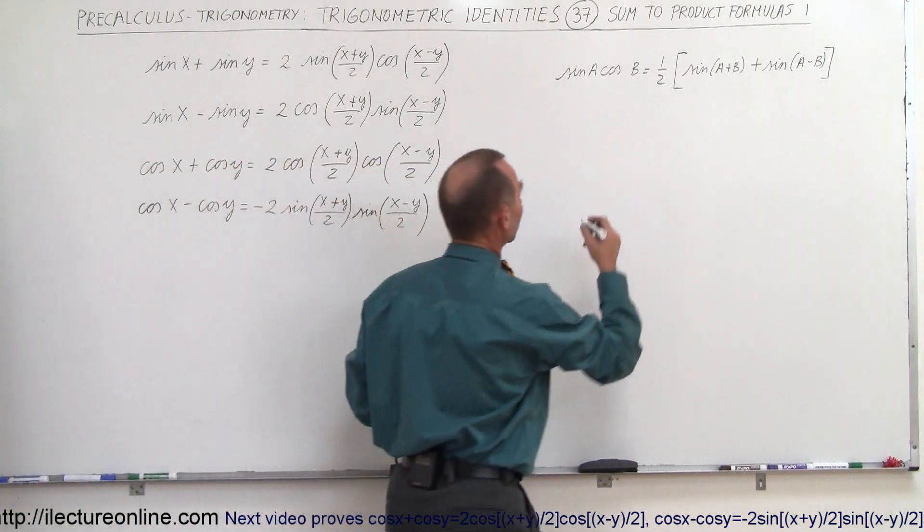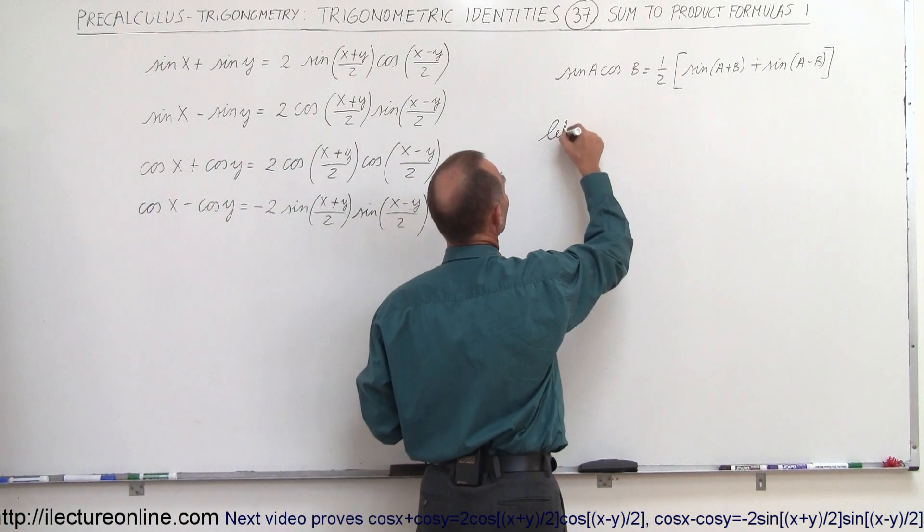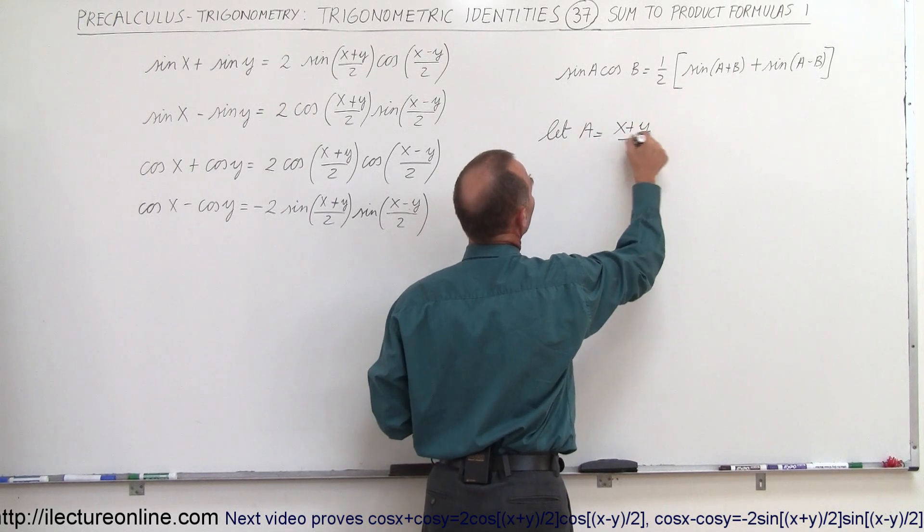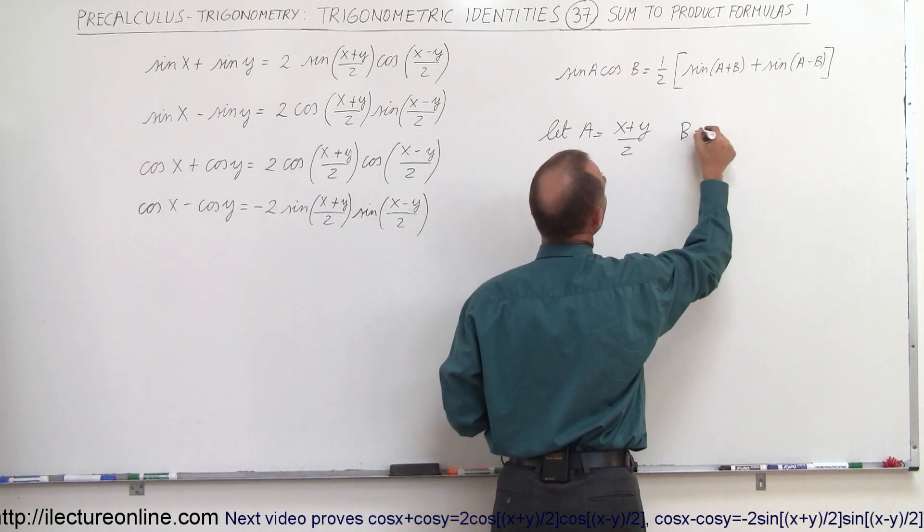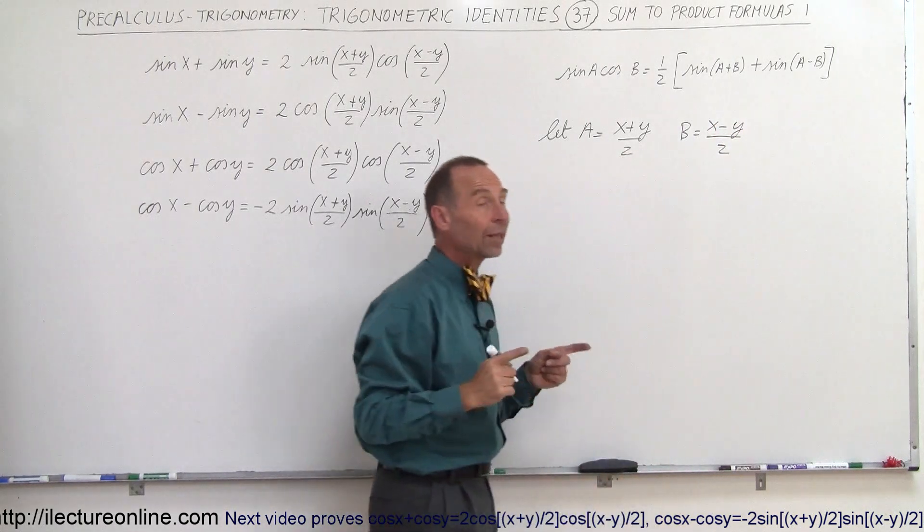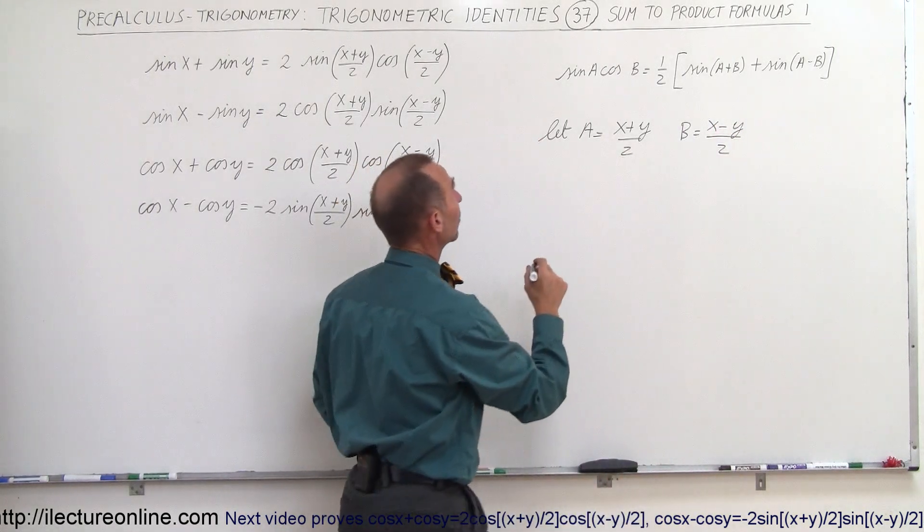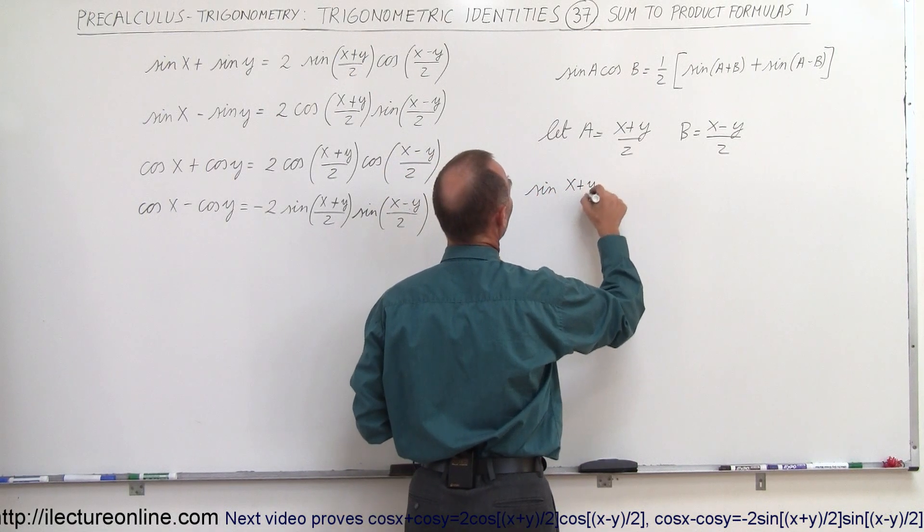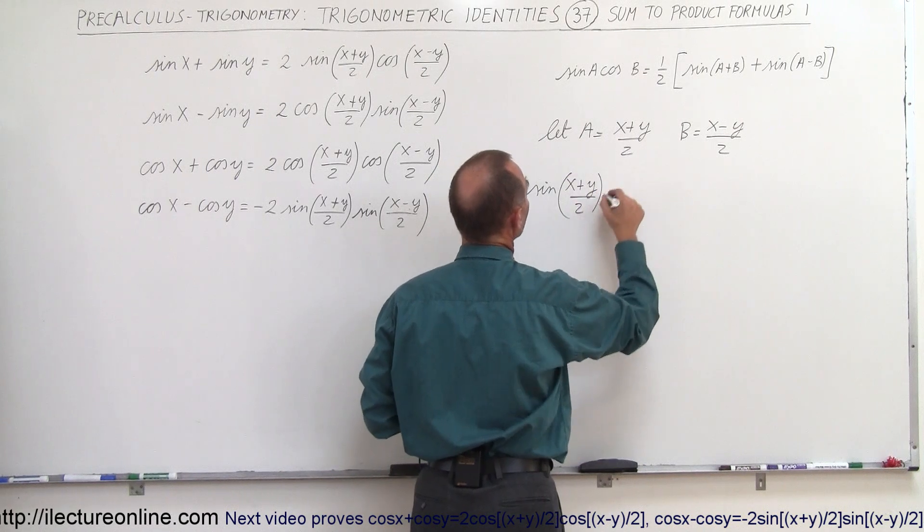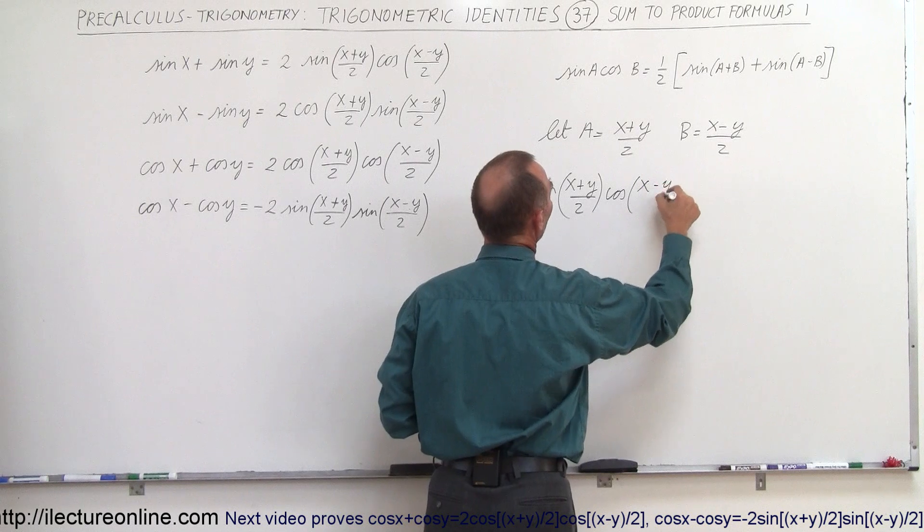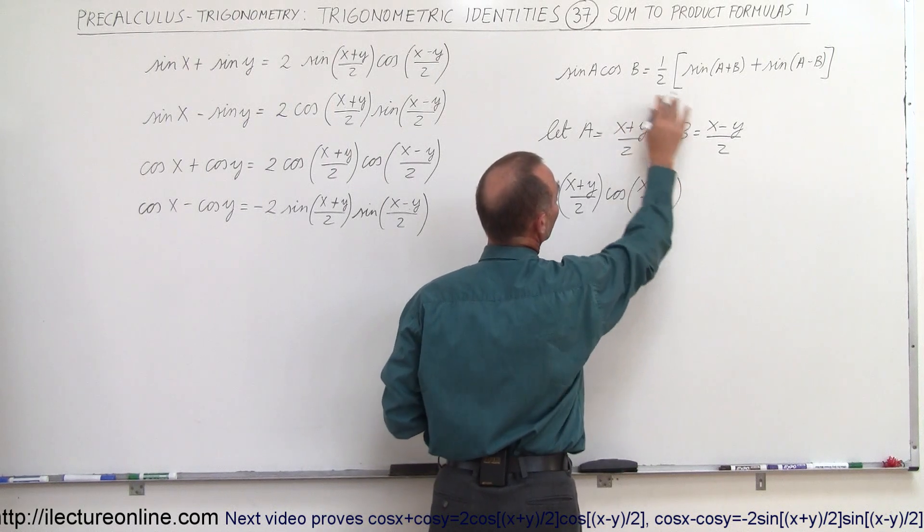To do that we have to make a substitution. We're going to let a equal x plus y divided by 2 and b equal to x minus y divided by 2. By doing that we're now going to substitute that in that equation and see what we get. So we end up with the sine of x plus y divided by 2 times the cosine of x minus y divided by 2 because b is equal to that.